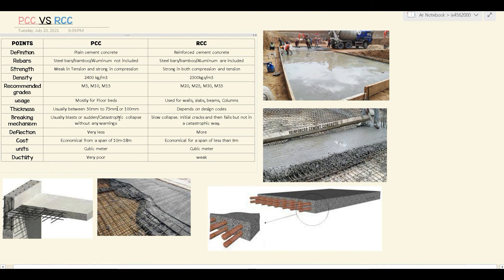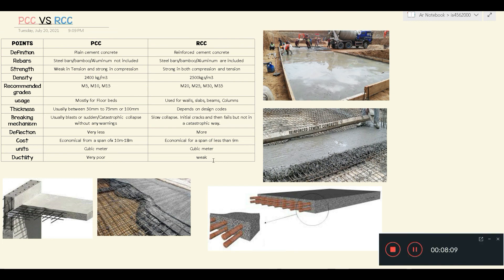For ductility, PCC has very poor ductility because it has no steel bars inside. Ductility means its ability to be shaped or deformed, and since PCC has no steel bars, it is completely non-ductile. For RCC, it is ductile but only up to a very small limit — so it's rated as weak in ductility. PCC has no ductility at all because it has no steel bars.